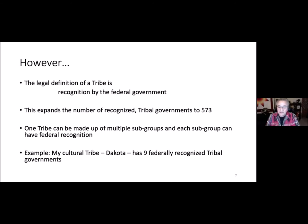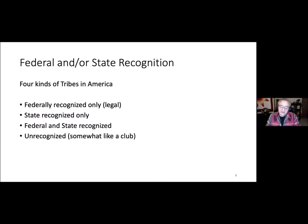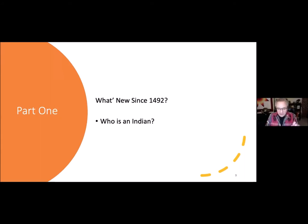For example, my cultural tribe is Dakota, but the Dakota have nine federally recognized tribal governments. There are four kinds of tribes in America: federally recognized only — which is the legal definition for this workshop — state recognized only, federal and state recognized, and unrecognized. Unrecognized is somewhat like a club, and those tribes are usually trying to seek federal recognition because there are a lot of benefits to having it.